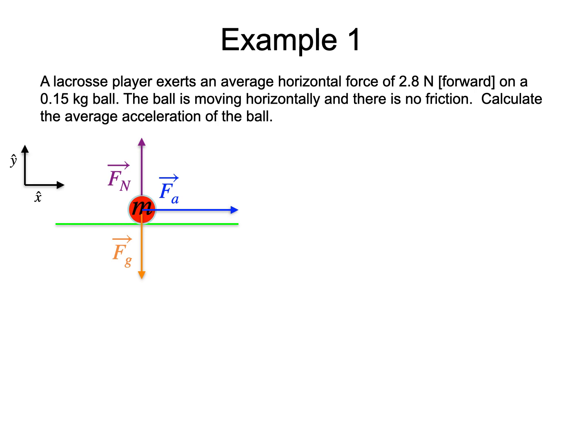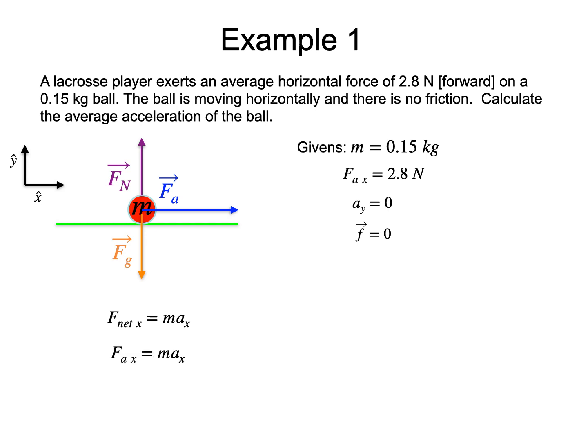Here is the set of reference directions that we will use. The direction of x-hat is chosen to be the same as the applied force. Our givens include the mass of the ball, the x-component of the applied force, and since the resulting motion is said to be horizontal, the vertical component of the acceleration is zero. Finally, the friction force is neglected. Let us start with Newton's second law as it applies to the x-component. Our free body diagram indicates that the only force with an x-component is the applied force, so we can replace the x-component of the net force with the x-component of the applied force. Isolating for a_x gives this. The next step is to substitute the givens and use a calculator to arrive at 19 meters per second squared for the x-component of the acceleration.